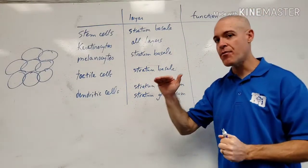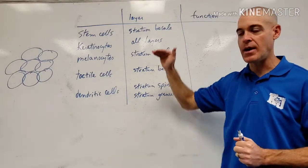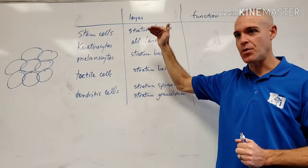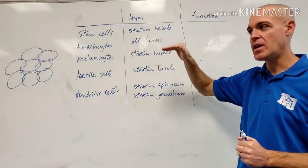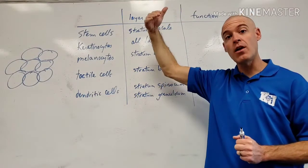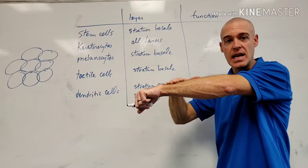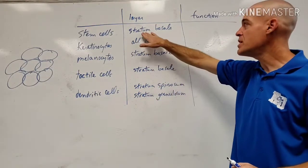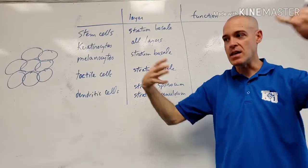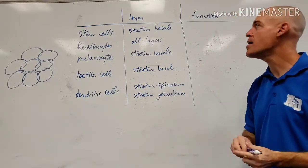As we get further toward the outside, the more superficial areas of the epidermis, we get to dead cells, older cells. The very outer layer of the epidermis is really dead cells. The stratum basale contains cells that are the newest and most active, meaning doing the most mitosis.